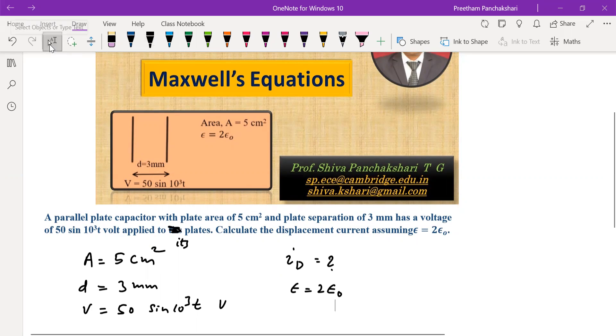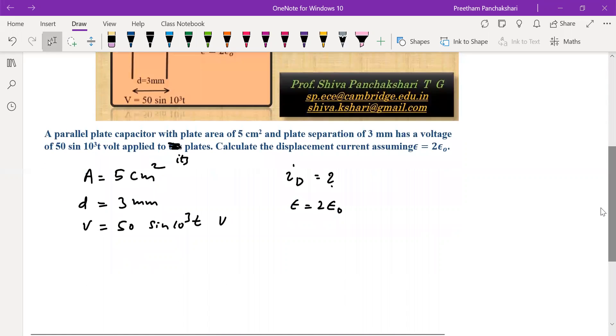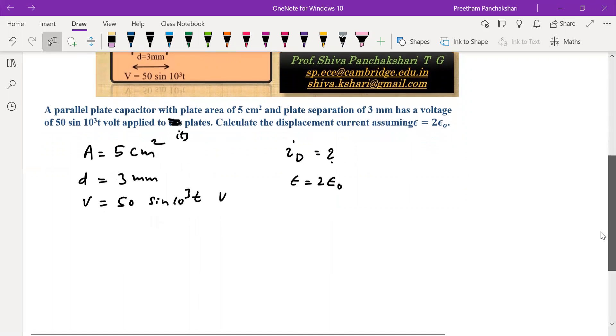So the data is given. Point to be noted here is there is a parallel plate capacitor across which a voltage is applied. That means EMF is developed or EMF is induced. You have to find the displacement current through the capacitor. So let us proceed now.